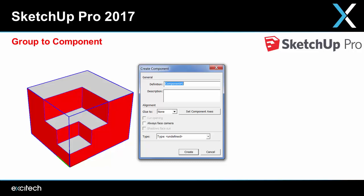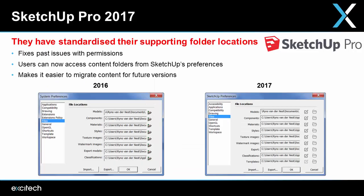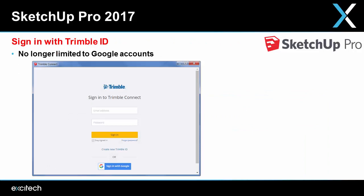They've closed some small process gaps: when you convert a group to a component you can now specify all the same attributes as you normally would. When you install SketchUp you're also installing helpful content like materials, styles, components, templates, and things like that. In this release they've made it a little bit easier for you to get to those files.